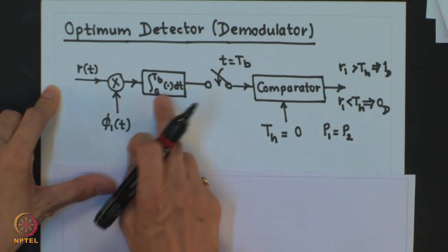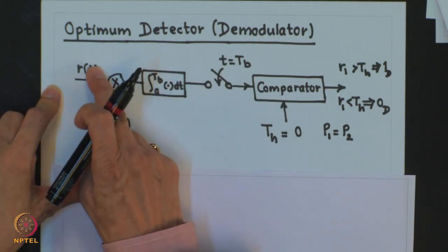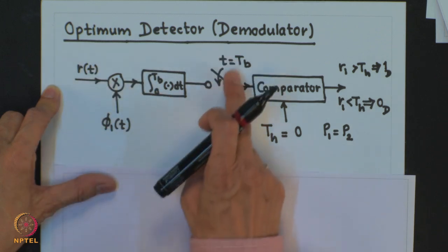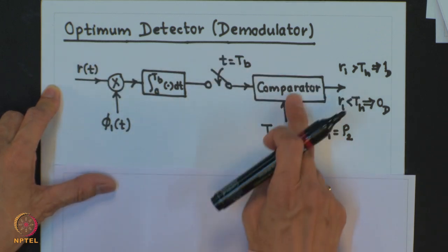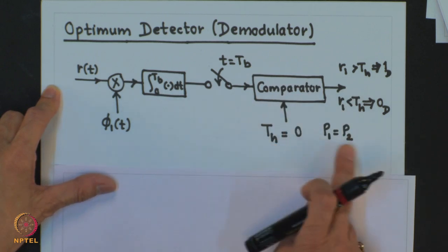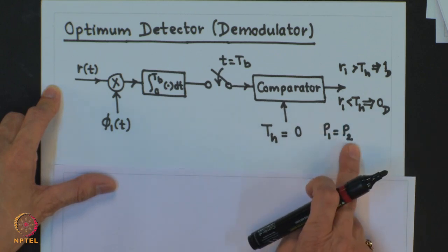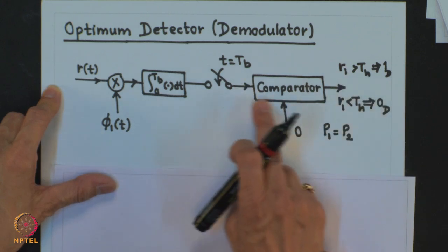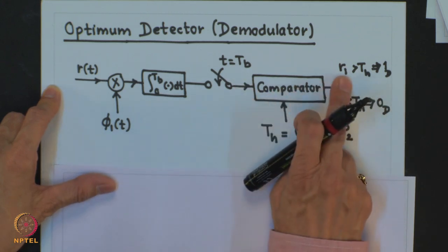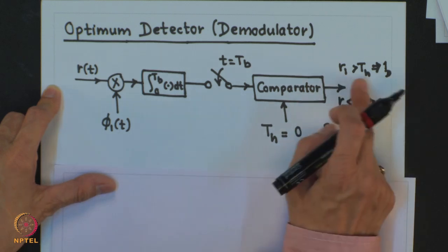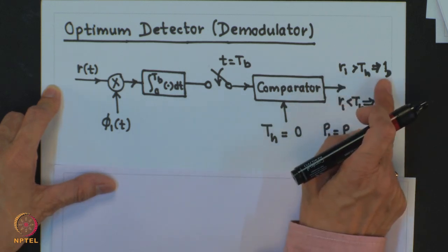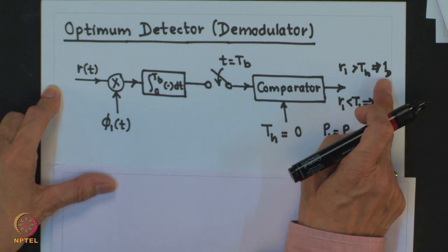Once we have phi_1(T) we can immediately get the optimum detector. Again, the optimum detector is a correlation receiver: correlate R(T) with phi_1(T), sample it at T equal to T_B, and put it to a comparator. The threshold is 0 because both symbols are equiprobable (P1 equals P2). If the projection R_1 is greater than the threshold, we decide symbol 1 has been transmitted.